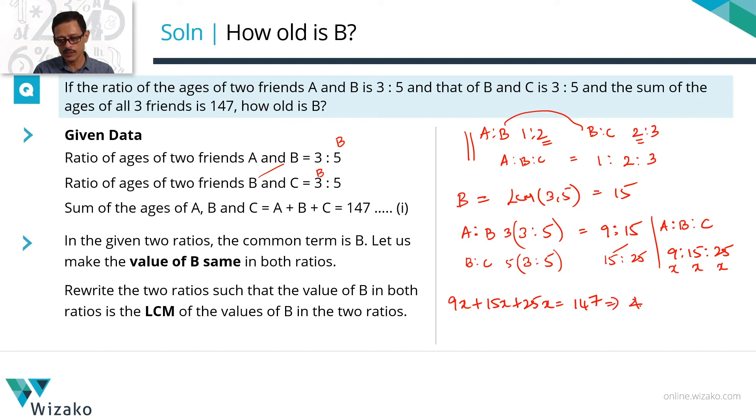49x is equal to 147. 49x is 147, x is equal to 147 upon 49 that is equal to 3.